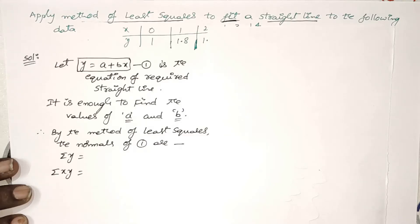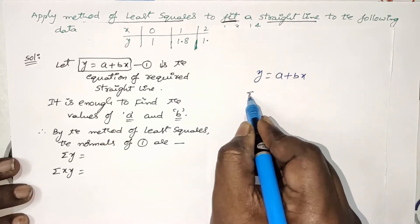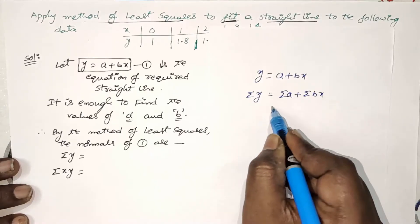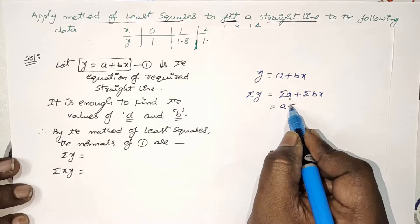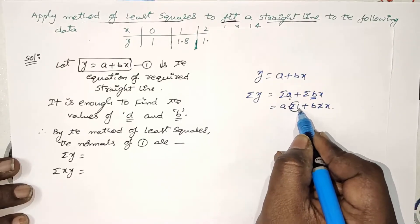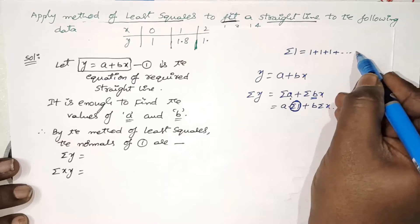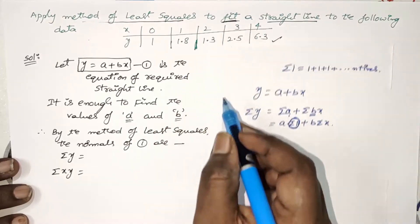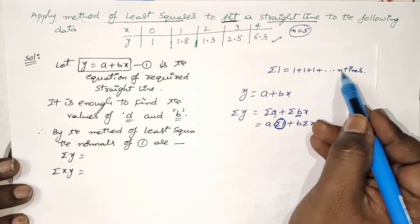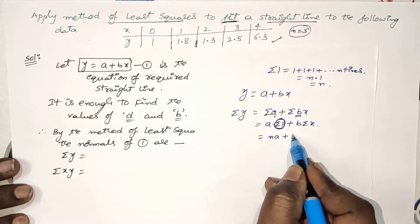The standard form of the line is y = a + bx. Take sigma on both sides — sigma is summation — you will get σy = σa + σbx. Since a is a constant term, write a·σ1, and since b is also constant, write b·σx outside the summation. In this chapter, σ1 is 1 + 1 + 1 + ... up to n times, where n is the number of given data points. In this problem, 5 points are given, so n = 5. Therefore, σ1 is replaced by n, giving na + b·σx.